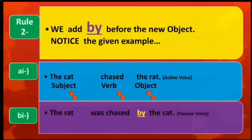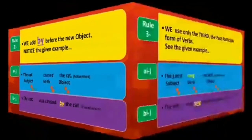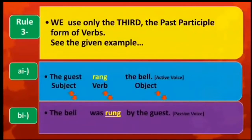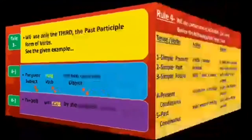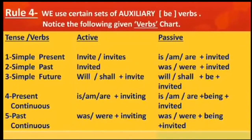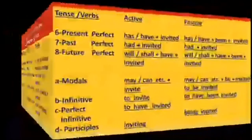Rule 2: We add 'by' before the new object. Notice it in the given example. Rule 3: We use only the past participle form of verbs. See the use of verbs in the given example. Rule 4: We use certain sets of auxiliary verbs with the principal verbs. See the following given chart.